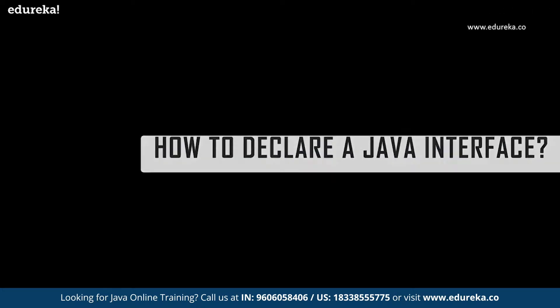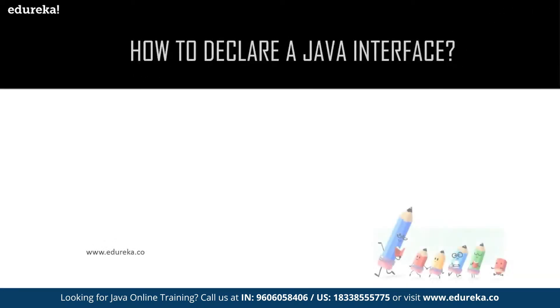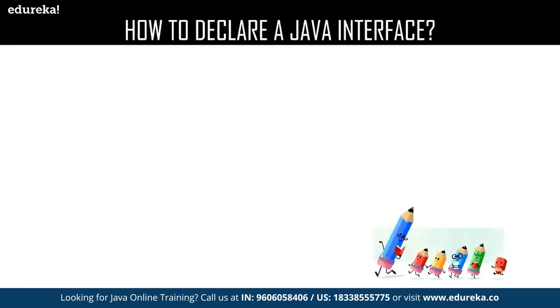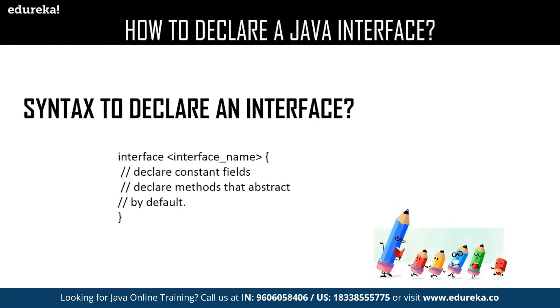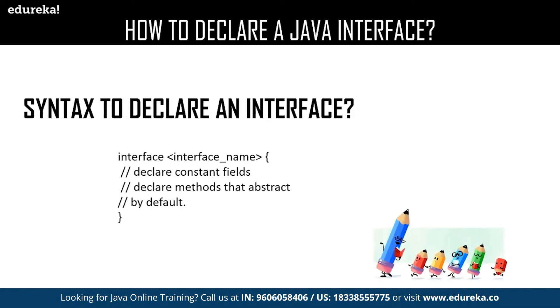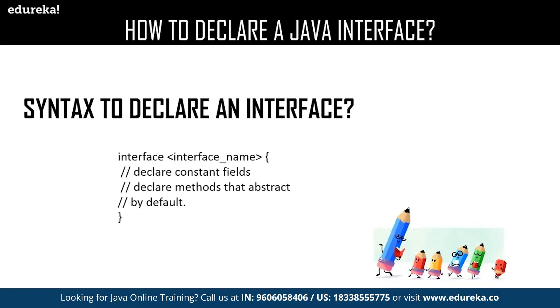Now let us have a quick revision about how to declare an interface. This is the syntax for declaring an interface where you will be using the interface keyword followed by the name of your interface. Inside the interface you can declare your methods. By default, all the methods which you declare in an interface are considered to be public.